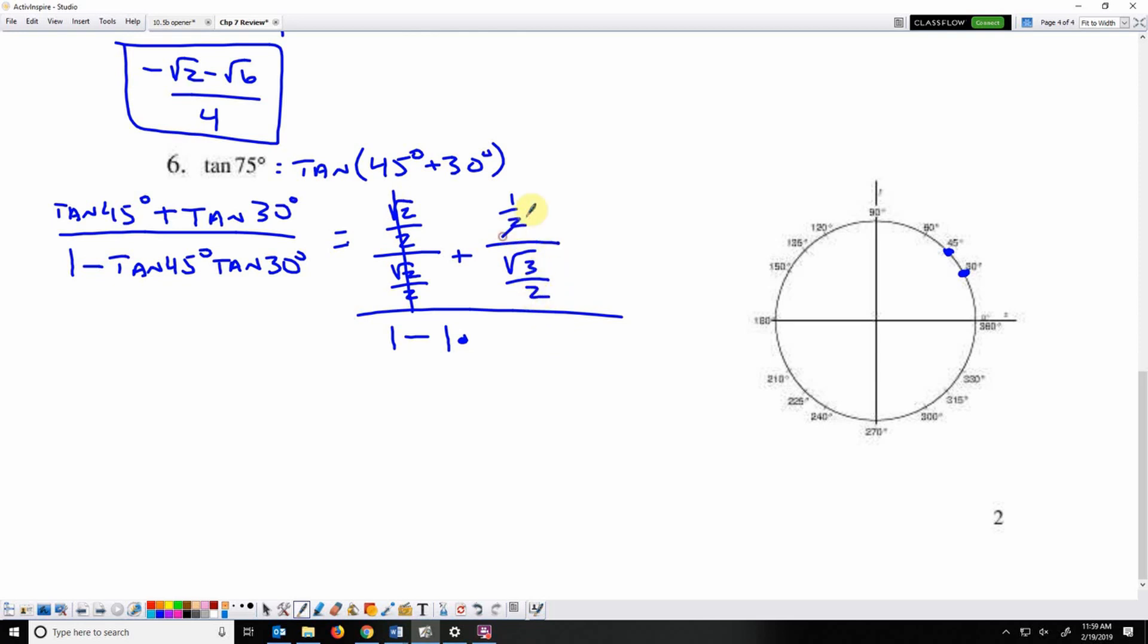1 half over root 3 over 2. I can flip and multiply. I can do loops. But when I do either way, those 2's are going to end up canceling. So I've got 1 over root 3. And I have to multiply it by root 3 over root 3, which is going to give me root 3 over 3.